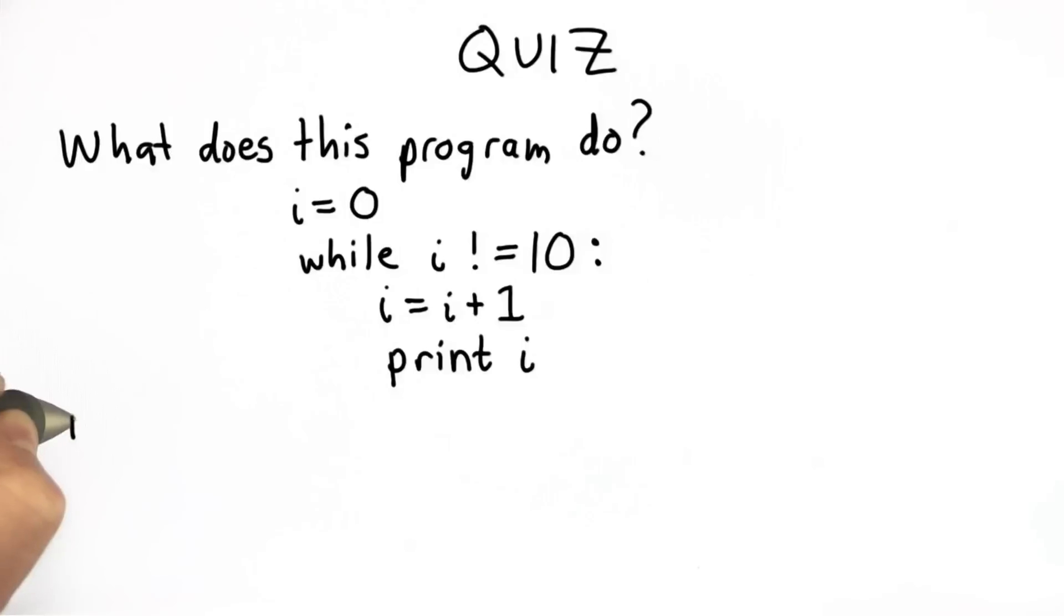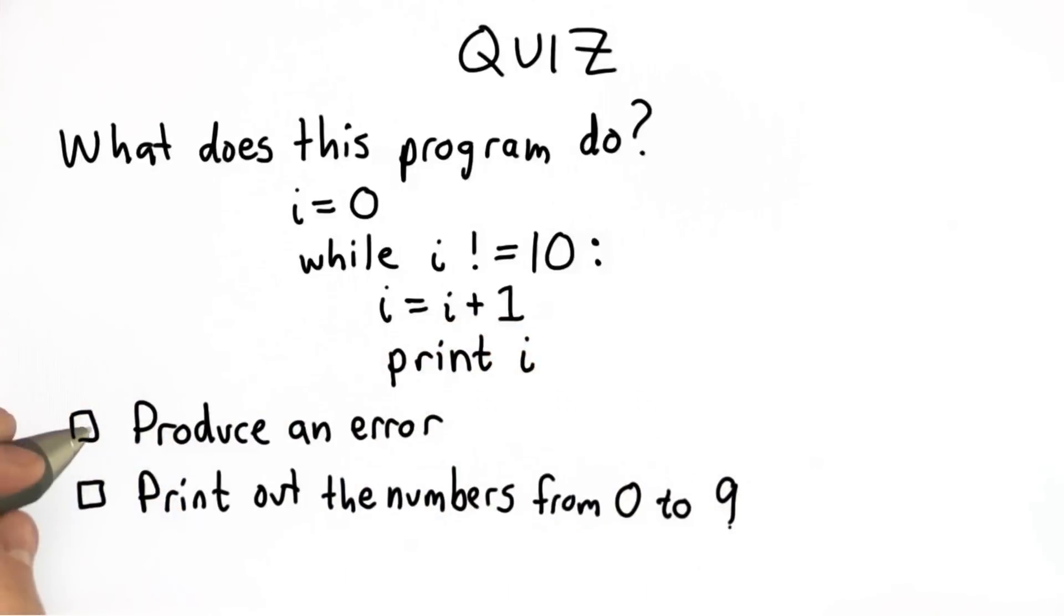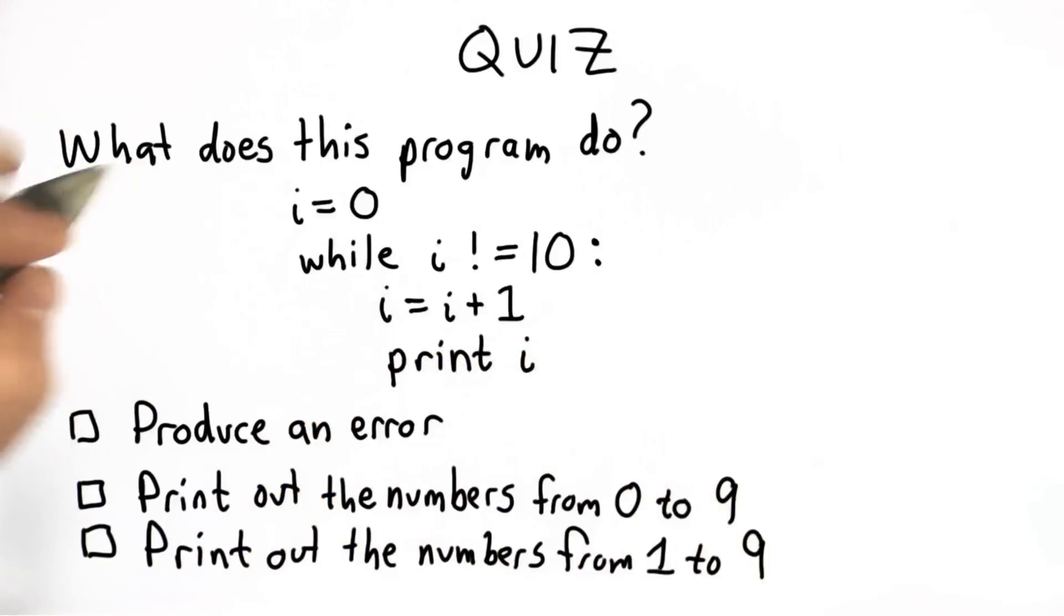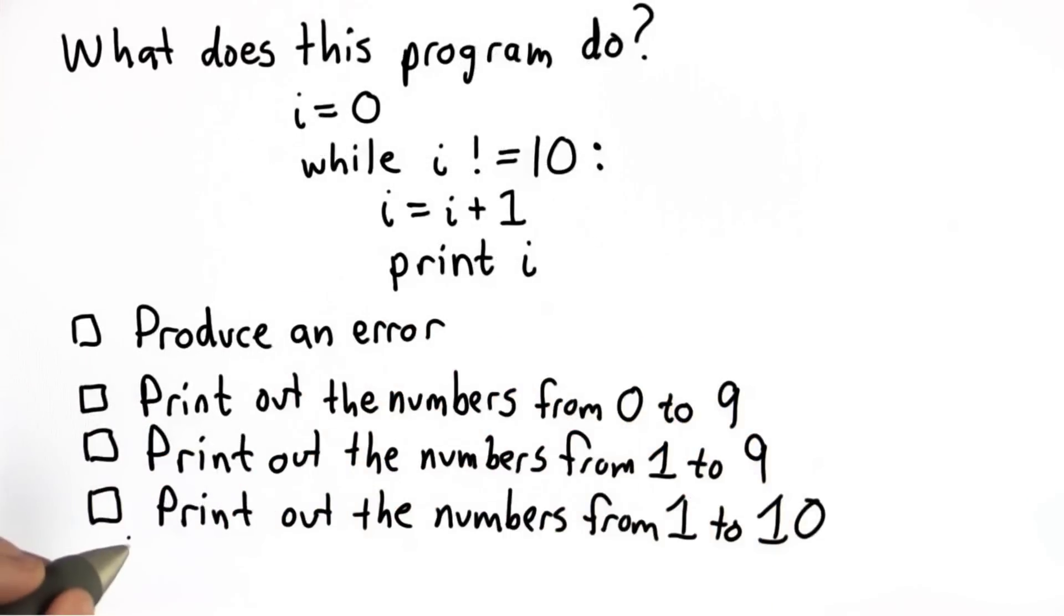The choices are produce an error, print out the numbers from 0 to 9, print out the numbers from 1 to 9, print out the numbers from 1 to 10, or the final choice is it runs forever, or at least until our machine runs out of power. So see if you can figure out what it does. You can definitely try running it, but try to figure out on your own before running it in the Python interpreter.